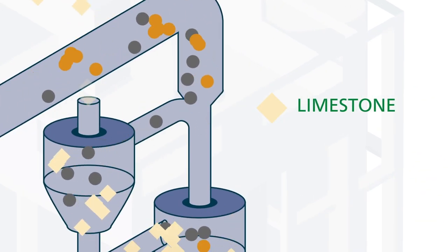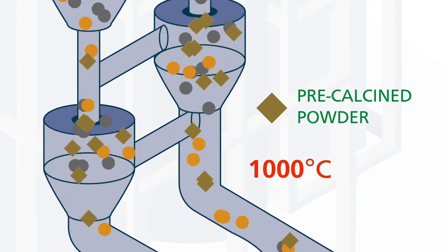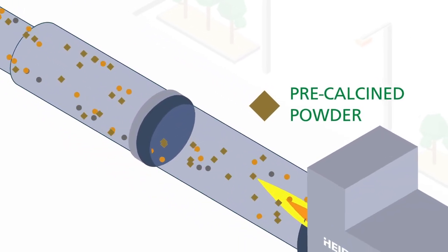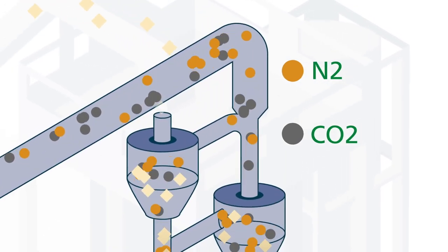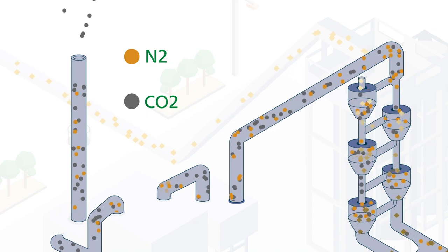The limestone from the quarry is heated through fast moving hot gases up to 1000 degrees. The resulting lime powder enters the kiln and is burnt into clinker. At the end of the process we have CO2 and harmless nitrogen in the flue gas, which currently are released into the atmosphere.